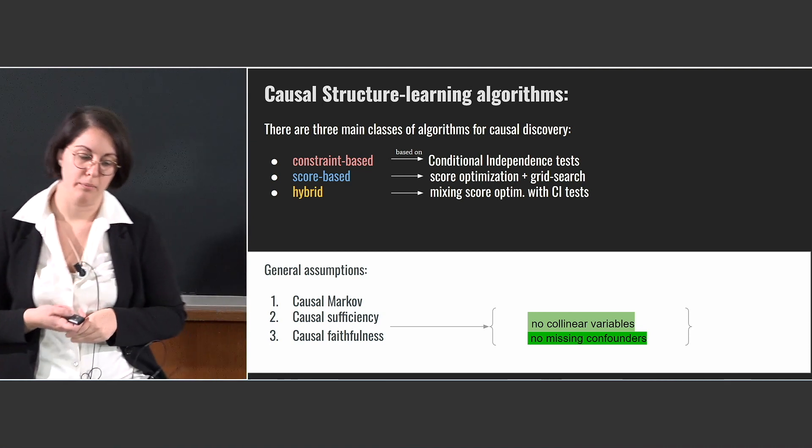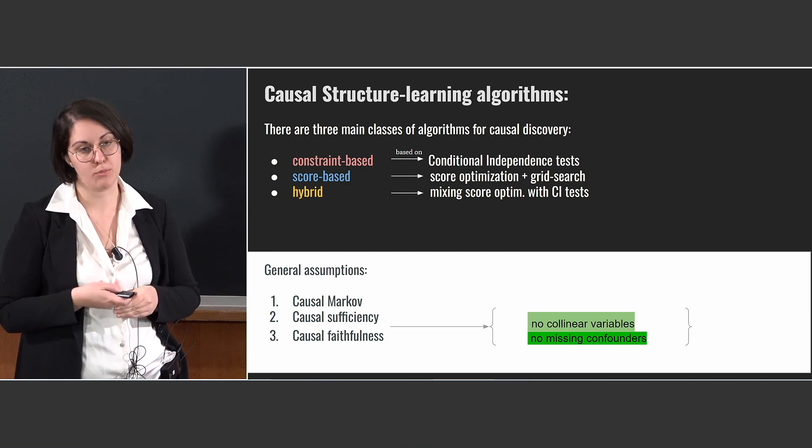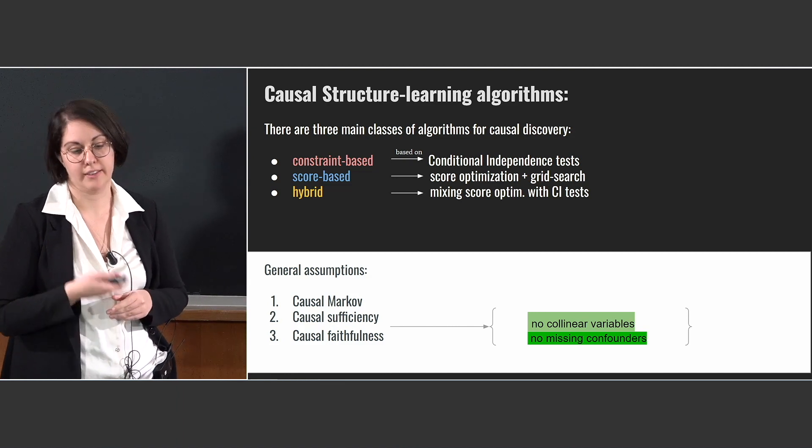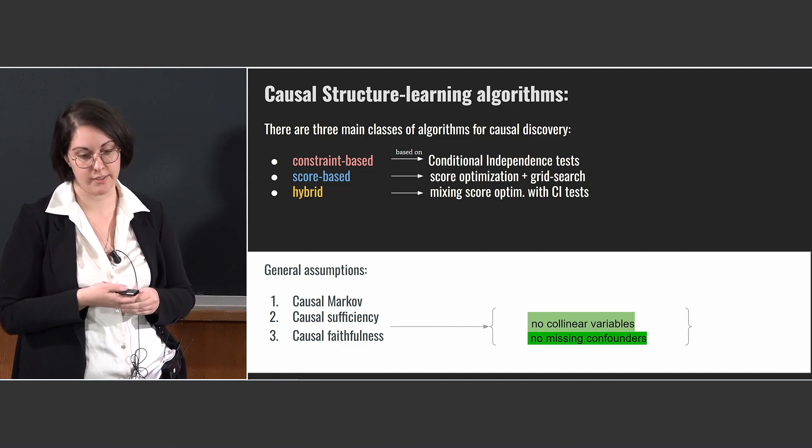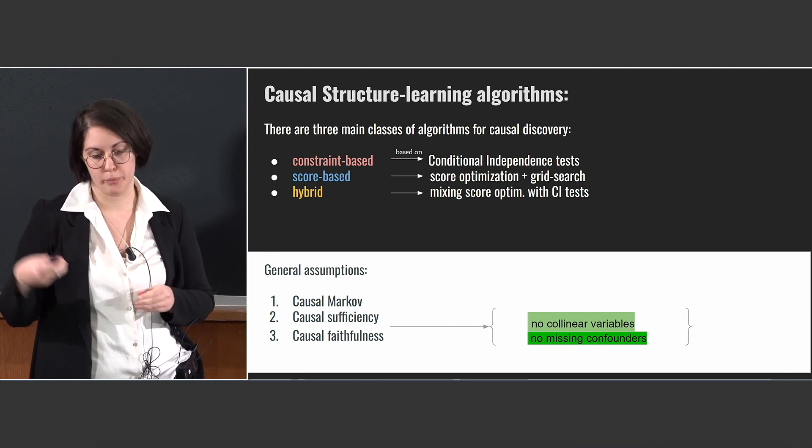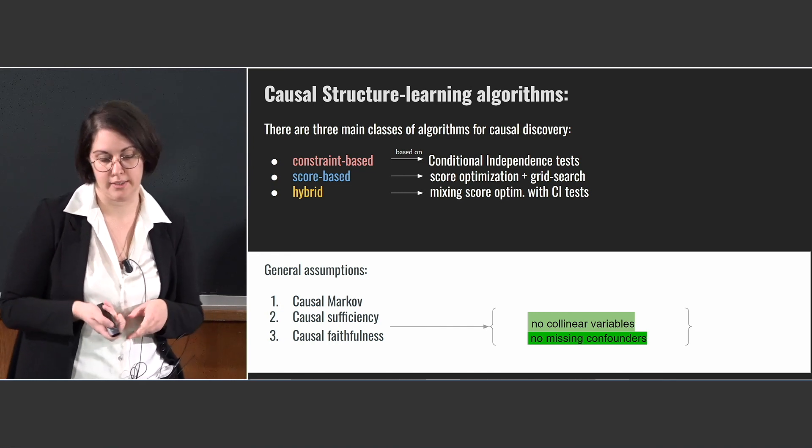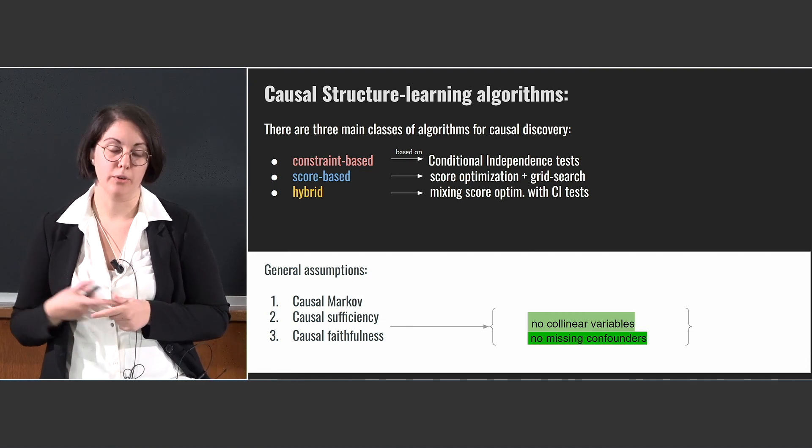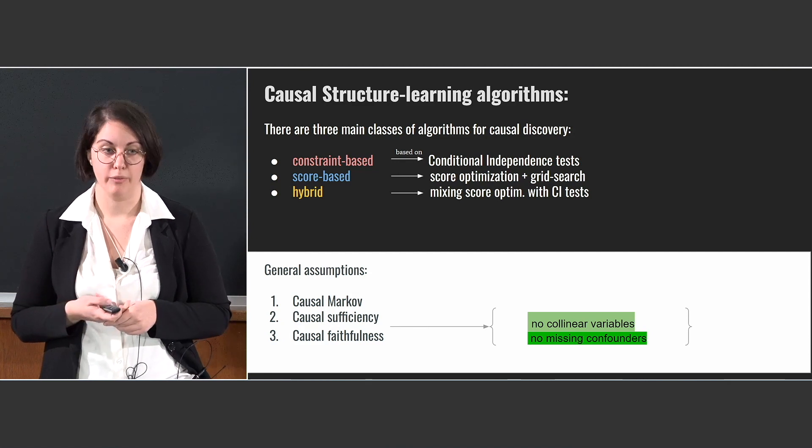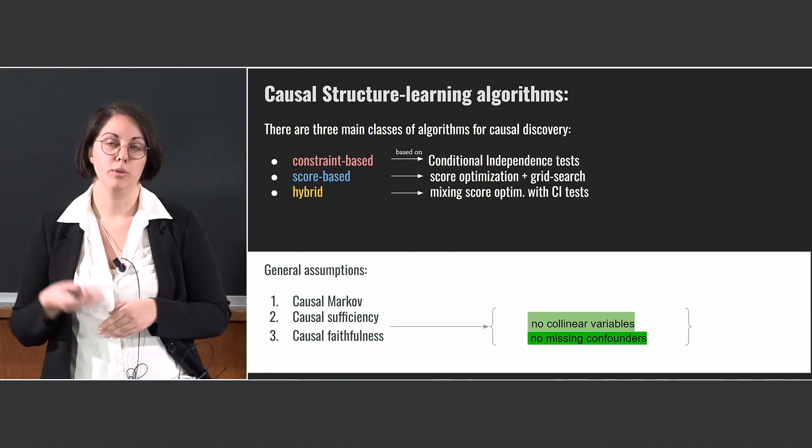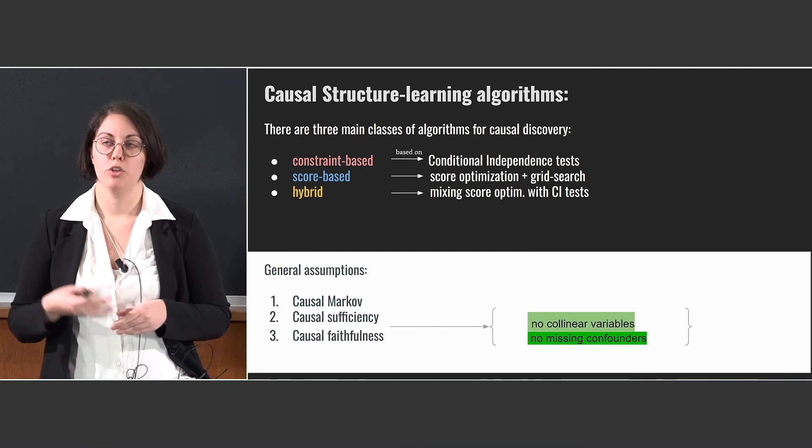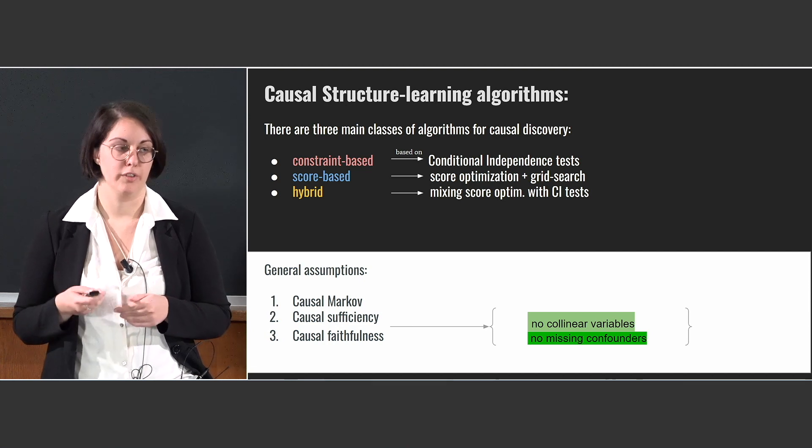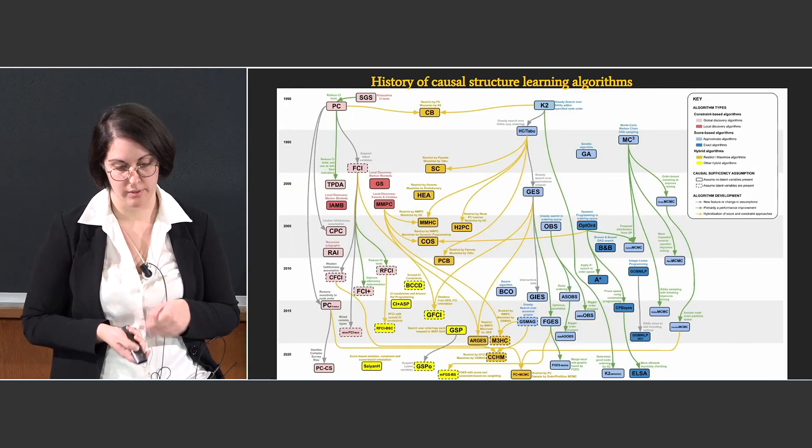All these algorithms make some general assumptions on the data that are listed in the bottom on this slide: causal Markov, causal sufficiency, and causal faithfulness. And to be sure that these assumptions are sufficient, we should check that our variables are not collinear, and that we don't miss any confounders. So when we want to use this method, we have to be sure that we are observing all the possible common causes of the variables that we want to test on.